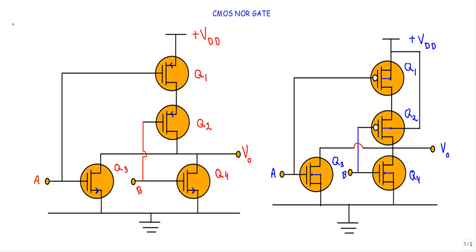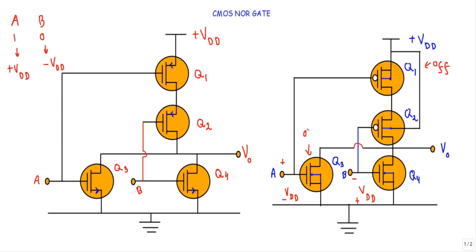Now consider the third case when A is at logic 1 and B is at logic 0. A at logic 1 means I connect plus VDD to input A, and B at logic 0 means I connect minus VDD to input B. Positive voltage at the gate of Q1 — P-type — so Q1 is OFF. Positive voltage at the gate of Q3 — N-type — so Q3 is ON. Negative voltage at the gate of Q2 — P-type — so Q2 is ON. Negative voltage at the gate of Q4 — N-type — so Q4 is OFF.